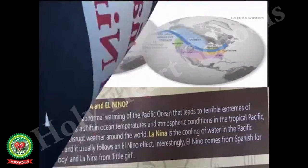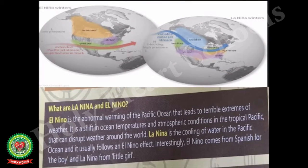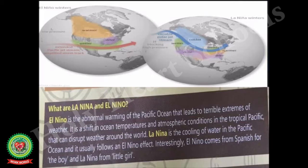The next topic is La Niña and El Niño. El Niño events are associated with warming of the central and eastern tropical Pacific, while La Niña events are the reverse — associated with a sustained cooling of those same areas. These changes in the Pacific Ocean and its overlying atmosphere occur in a cycle known as ENSO. The full form of ENSO is El Niño Southern Oscillation. The meaning of El Niño is 'the little boy' and the meaning of La Niña is 'the little girl.'